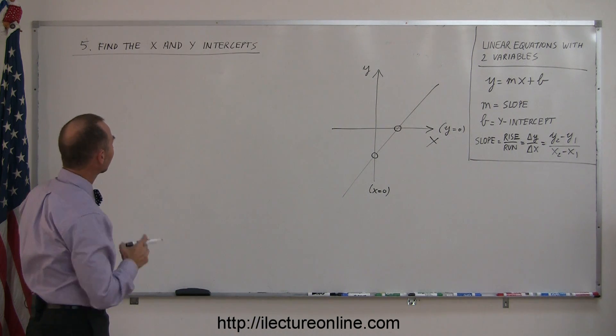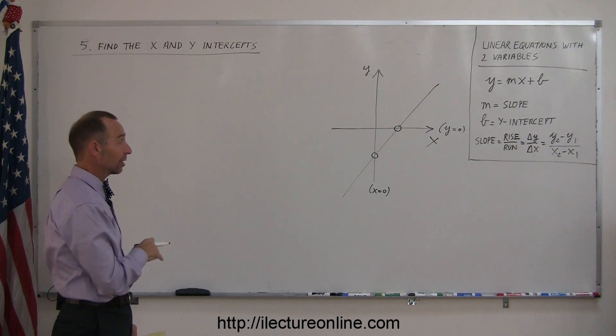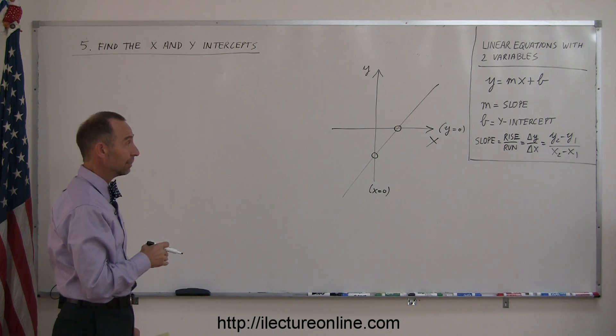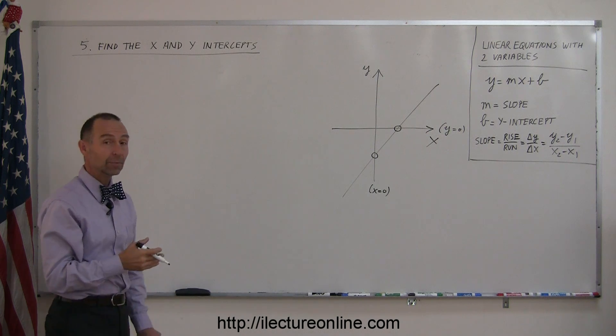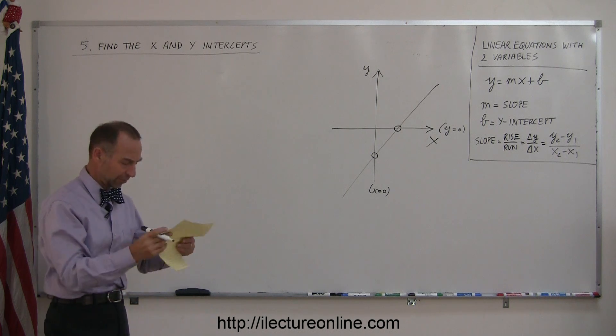If we're going to find the x-intercept, we simply take the equation that we're given and set y equal to zero. If you want to find the y-intercept, we take the equation that we're given and we set x equal to zero. Let's show you some examples of that.